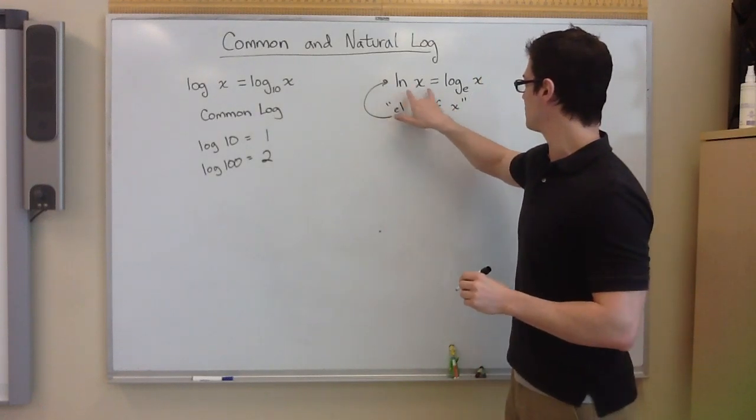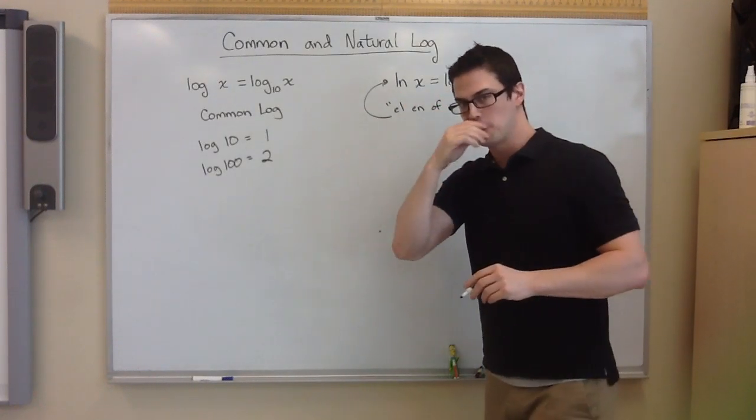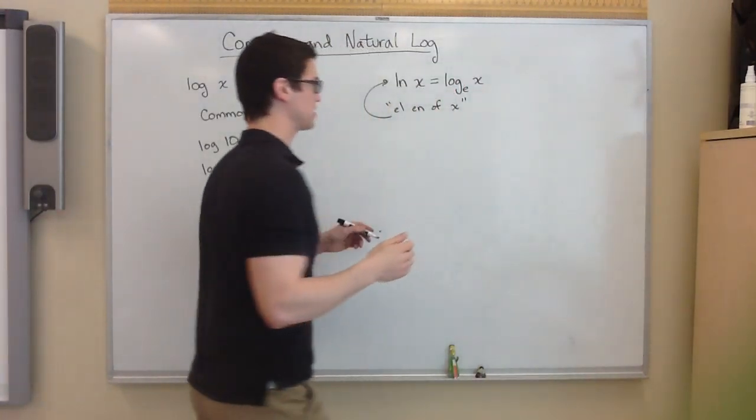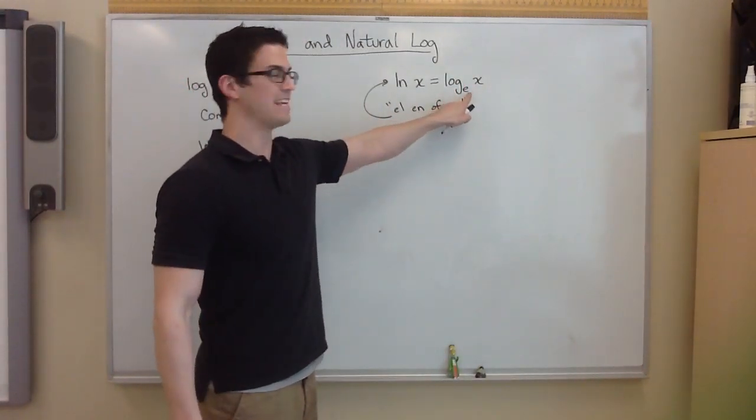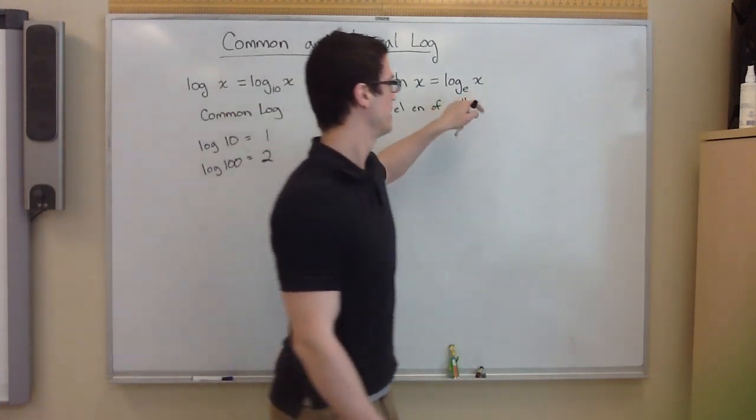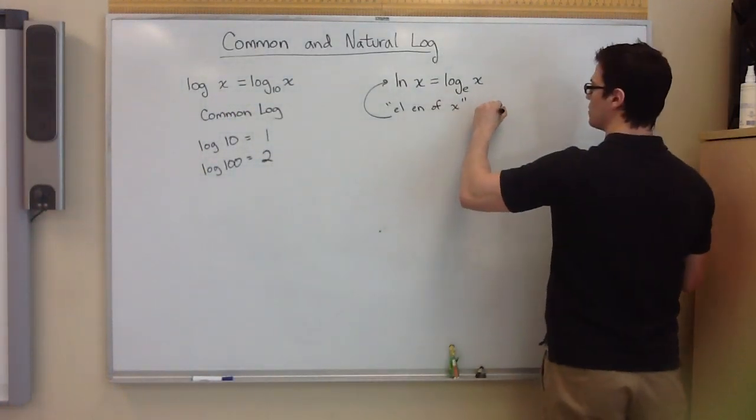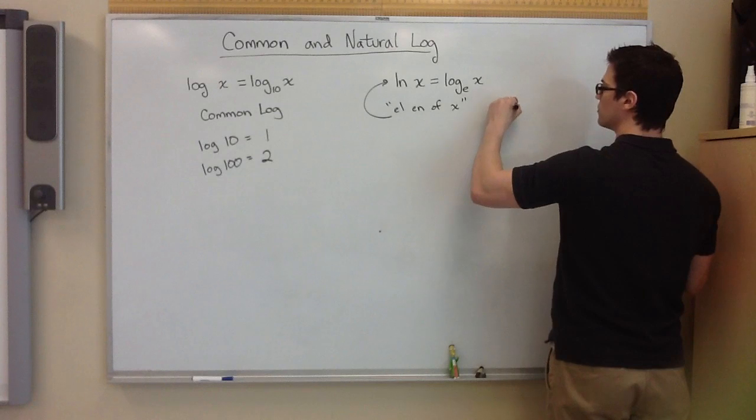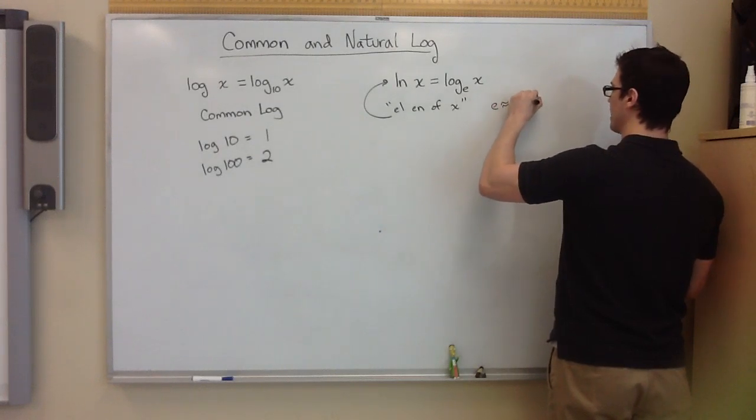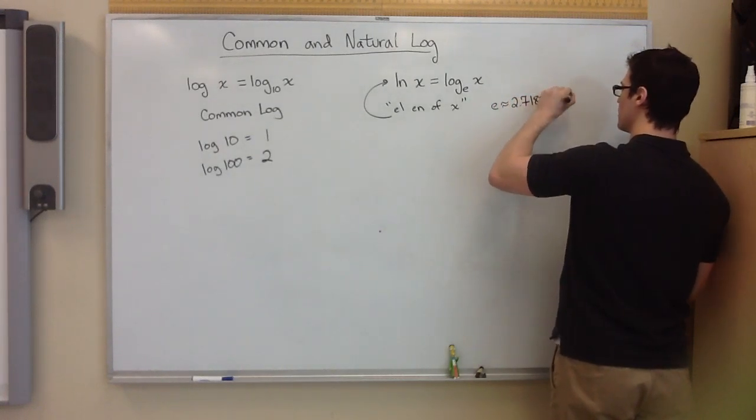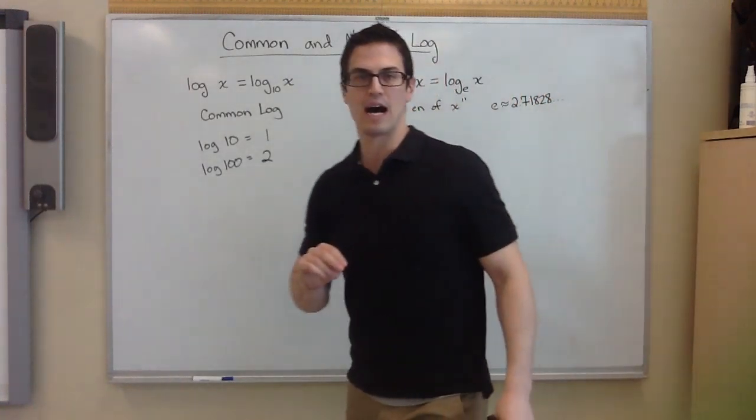Now basically what this means, it's a special base. It's a super special base actually. It's my favorite constant. It's this e right here. And e is about equal to 2.71828. It goes forever, just like pi.